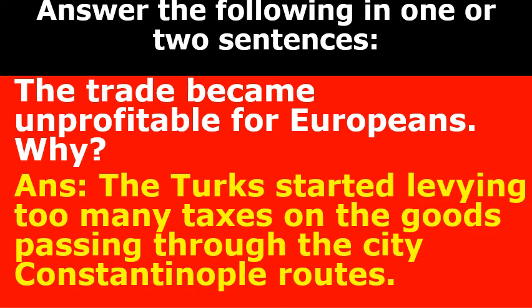Answer the following in one or two sentences. Here are about five important questions that may come for one or two marks. Why did trade become unprofitable for Europeans? The Turks started levying too many taxes on goods passing through the Constantinople routes. Therefore, the trade became unprofitable for European traders.